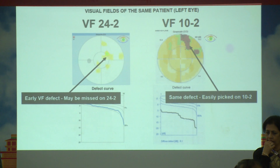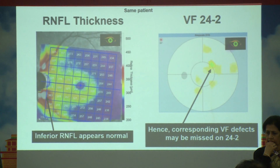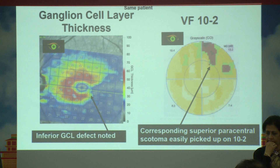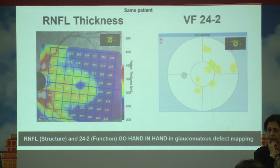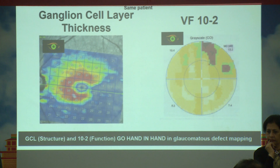Coming back to the same case: an early visual field defect may be missed on 24-2 but picked up on 10-2. As was rightly pointed out, always correlate the 24-2 with the RNFL thickness via structure-function correlation. Similarly, when you see the 10-2, go back and correlate it with the ganglion cell inner plexiform layer. What we might easily miss on RNFL and 24-2 we can pick up on 10-2 combined with the ganglion cell inner plexiform layer.